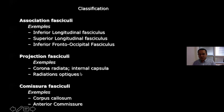Finally, we have commissural fascicles — those that cross the midline and connect the two cerebral hemispheres. The main example is the corpus callosum, but we can also mention the anterior commissure, the posterior commissure, and even the fornix may be considered a commissure because of the hippocampal commissure between the two bodies of the fornix. The fornix is actually a very interesting fascicle — it may be considered a commissural fascicle, but also a projection fascicle because it connects the mammillary body to the medial aspect of the temporal lobe, linking diencephalon and telencephalon.